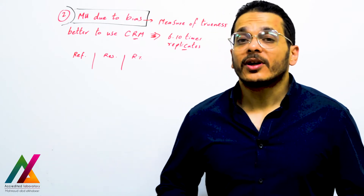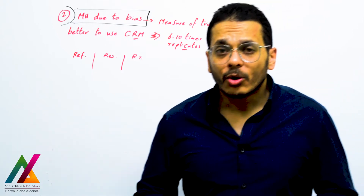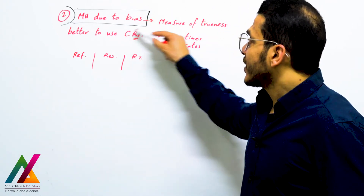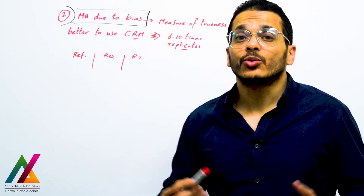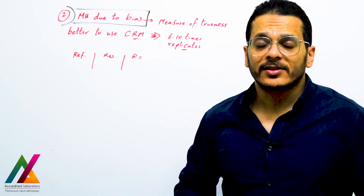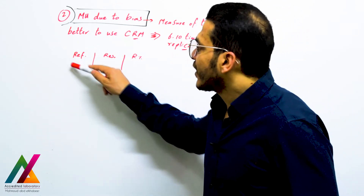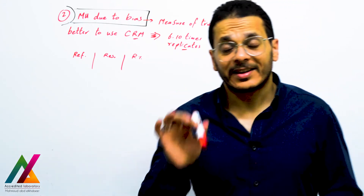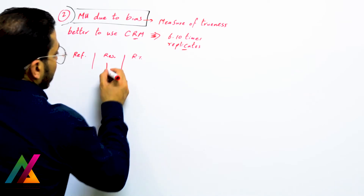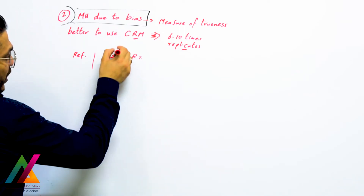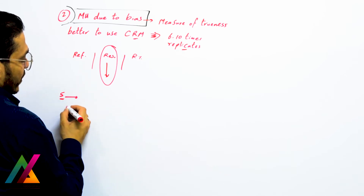After that, you calculate measurement uncertainty due to bias from trueness evaluation. It is best to use a certified reference material (CRM) that contains your target analytes. You should analyze 6 to 10 replicates of this CRM, and you have the reference value for your target analyte from the CRM certificate.